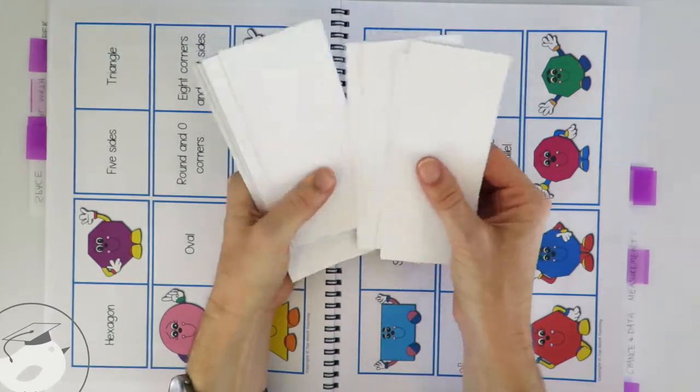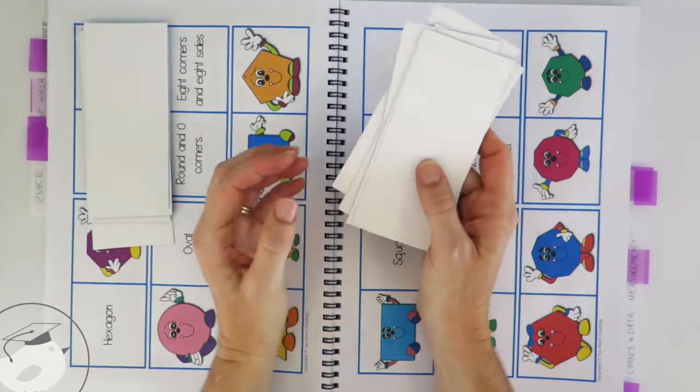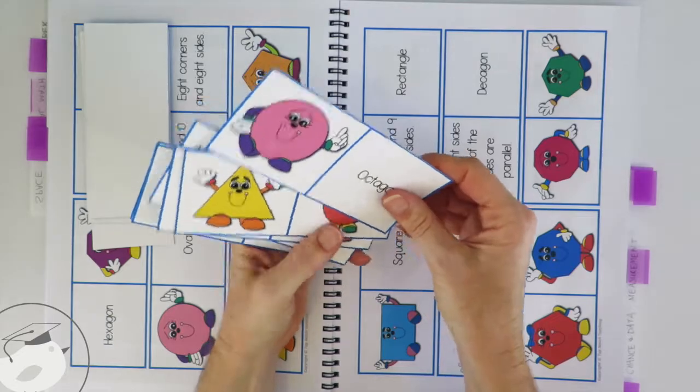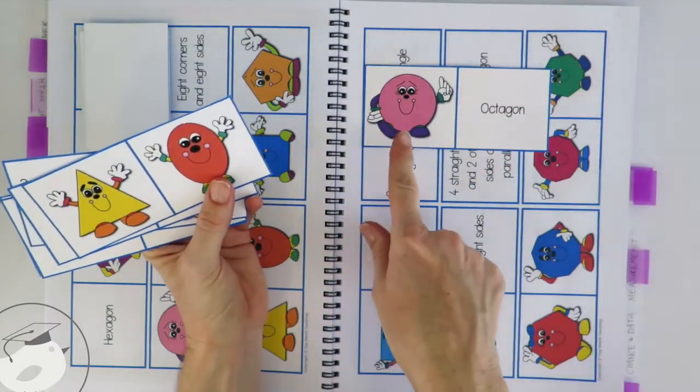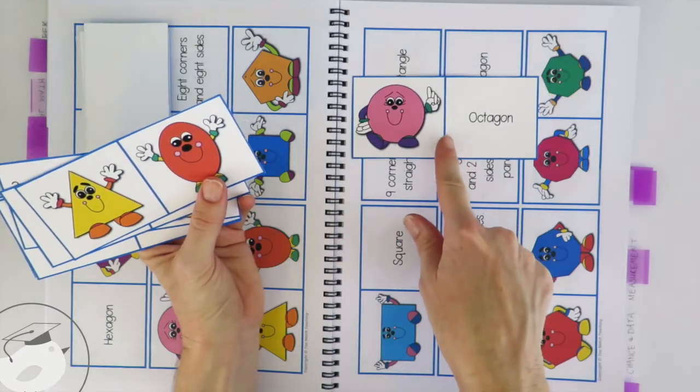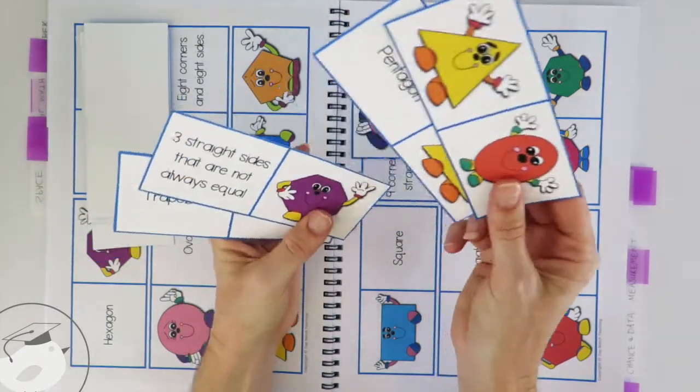But if you want to play it as a dominoes game, you would give each student five cards and they get to look at their cards. Then one student would put theirs down and if they've got either a circle or an octagon or something that can go to that, they can put it there.